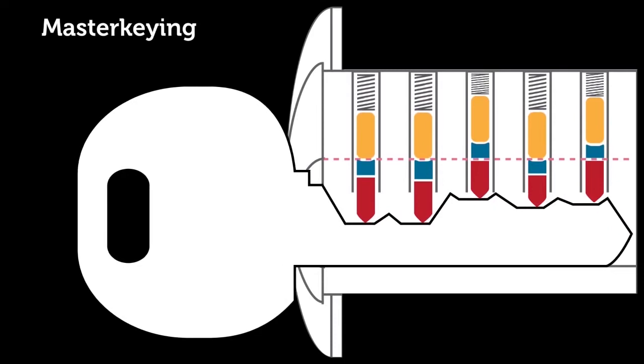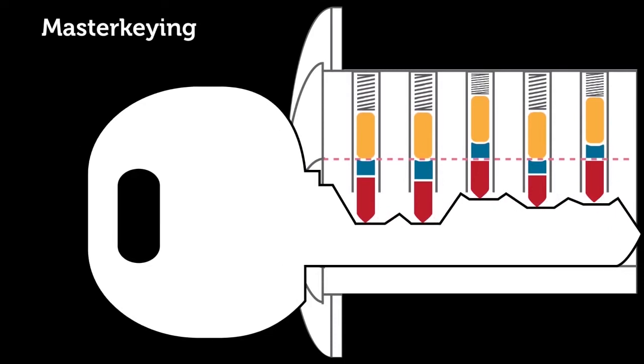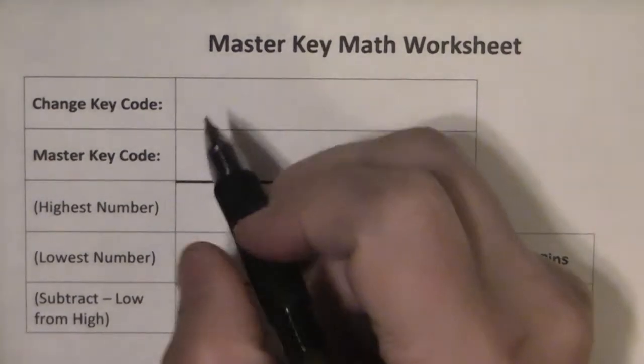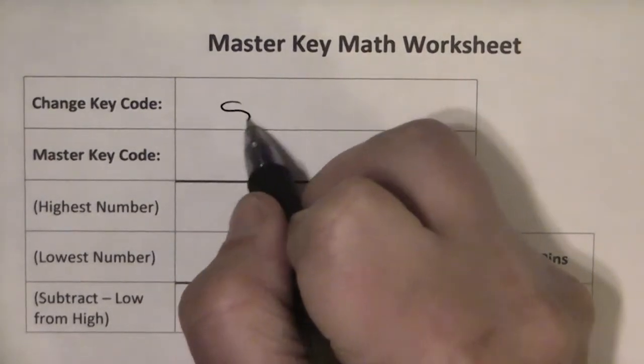To figure out which pins to use in the lock, we use a simple math formula. The first step of figuring out which pins to use is to write down the change key code and the master key code.